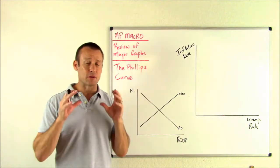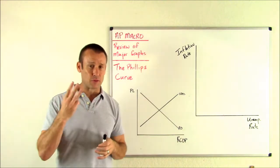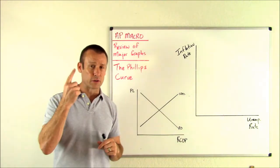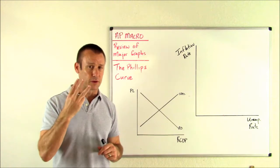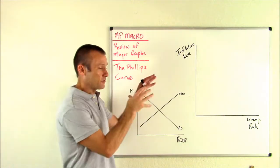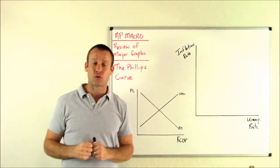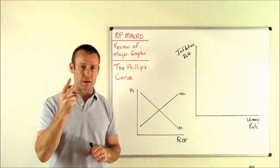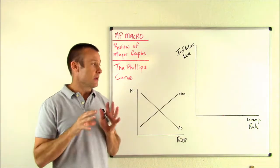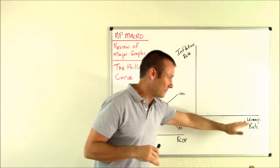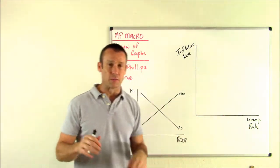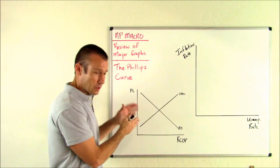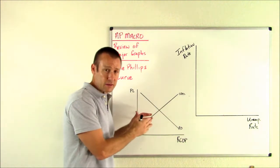Macroeconomists are obsessed about three things: real GDP, the unemployment rate, and the inflation rate. This graph is all about two of them — the inflation rate and the unemployment rate. What is that relationship? To answer that question, I'm going to go to the AS-AD model. We really want to link our knowledge about the Phillips Curve with our knowledge about the AS-AD model.